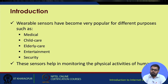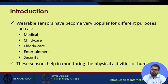These sensors help in monitoring the physical activities of humans. People may raise concerns about privacy — they may not be comfortable sharing their activity data over the network. There are various issues regarding privacy and security of data, but we won't be dealing with those issues here. Let us go through the basics — in medical, child care, elderly care, entertainment, security, and even military — what are the applications and implications of using activity recognition.